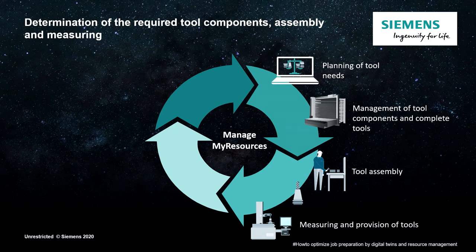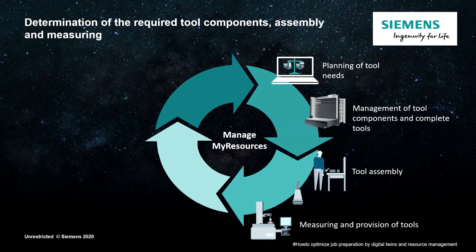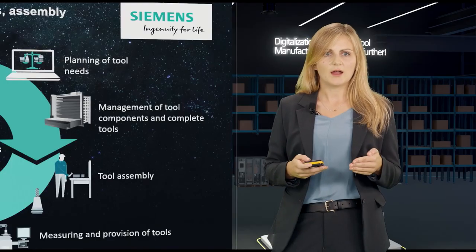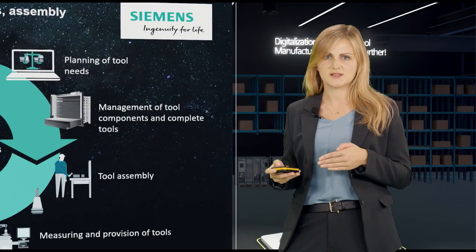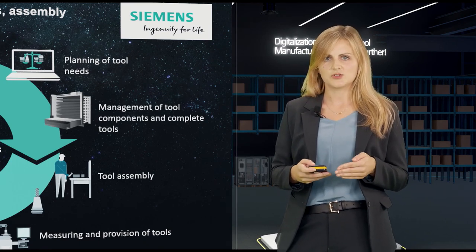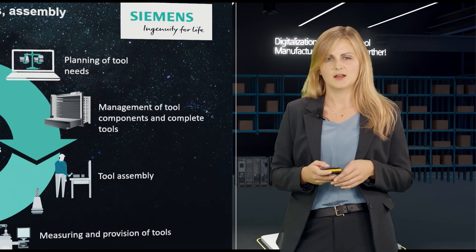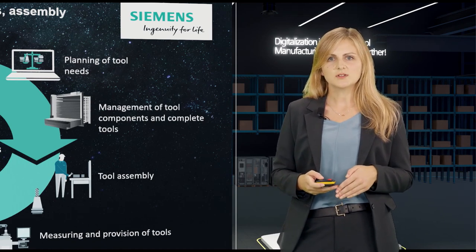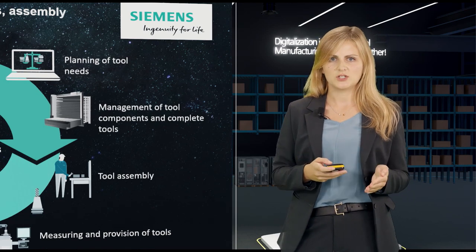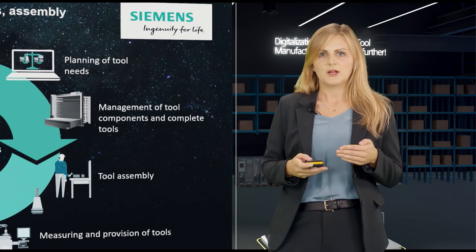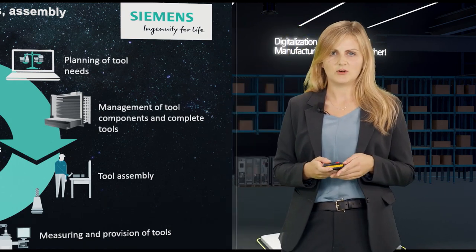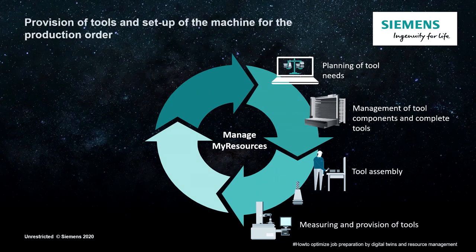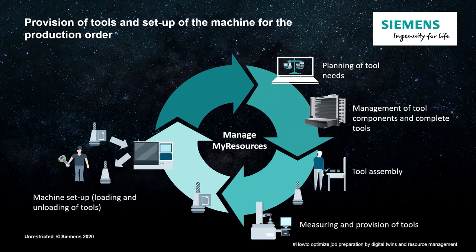As you could see, ManageMyResources was used to easily determine which tools need to be preset. The tool presetter is supported by the software in such a way that he knows exactly where he finds the required components in his warehouse, how high the stocks are, and how these need to be assembled. After the assembly, the tools are measured, usually on a tool presetting device. And the tool correction data is automatically transferred to ManageMyResources. The tools can then be assigned to the cabinet or machine where they are needed. Therefore, ManageMyResources knows the location and the correction data of the tool.